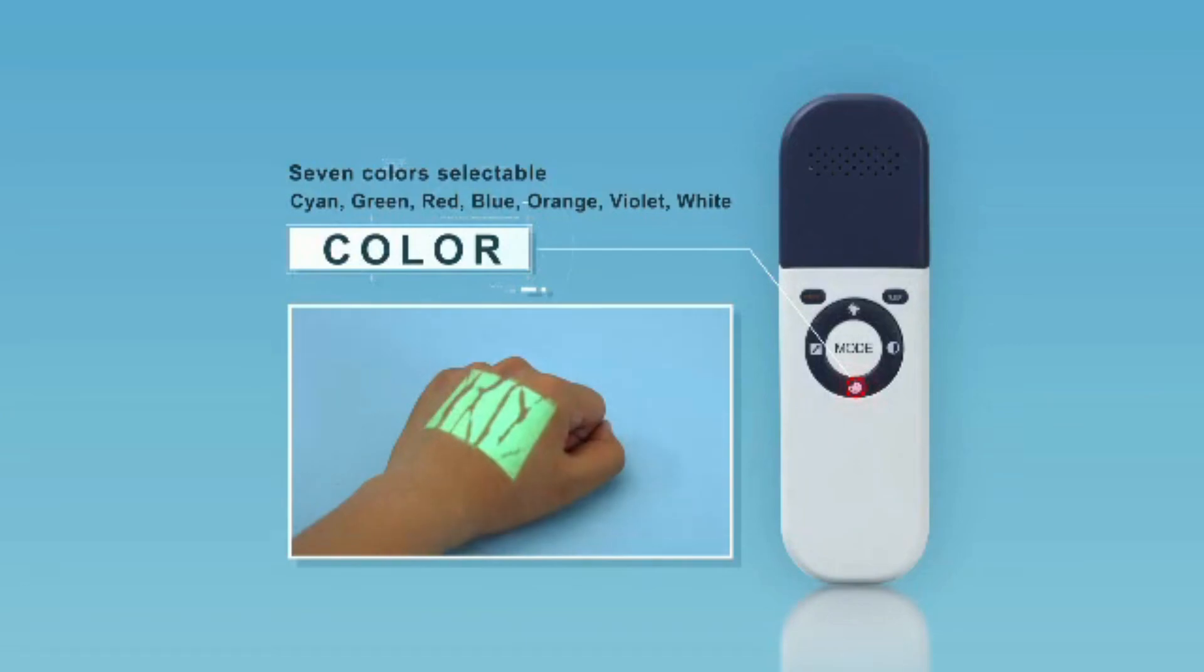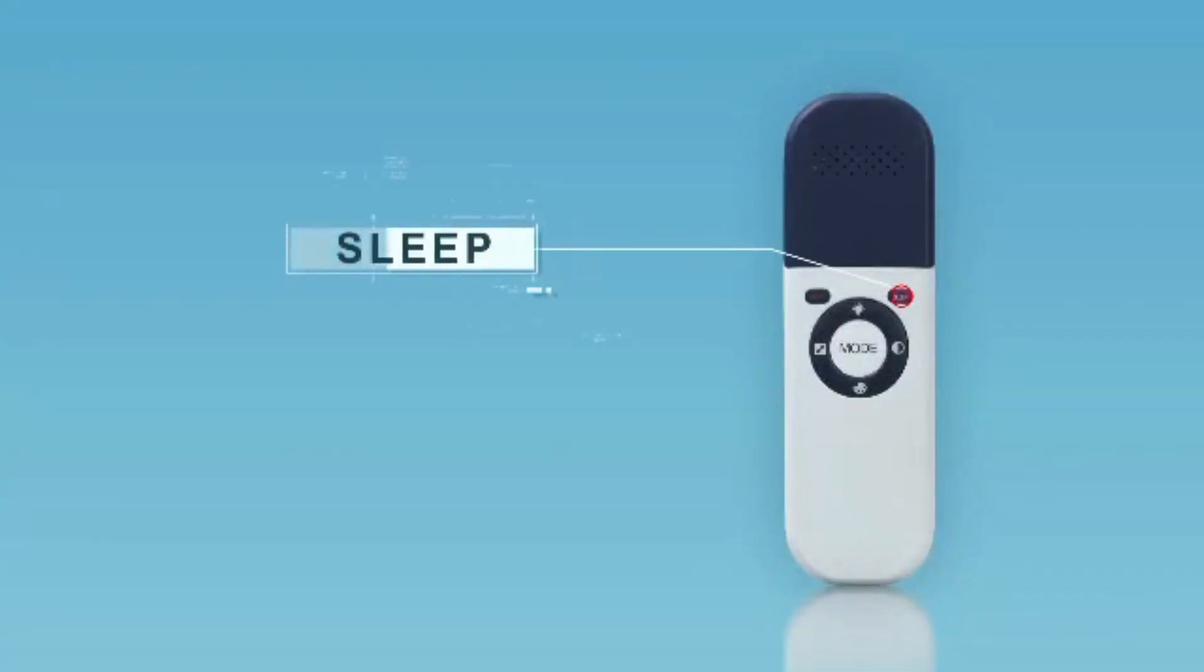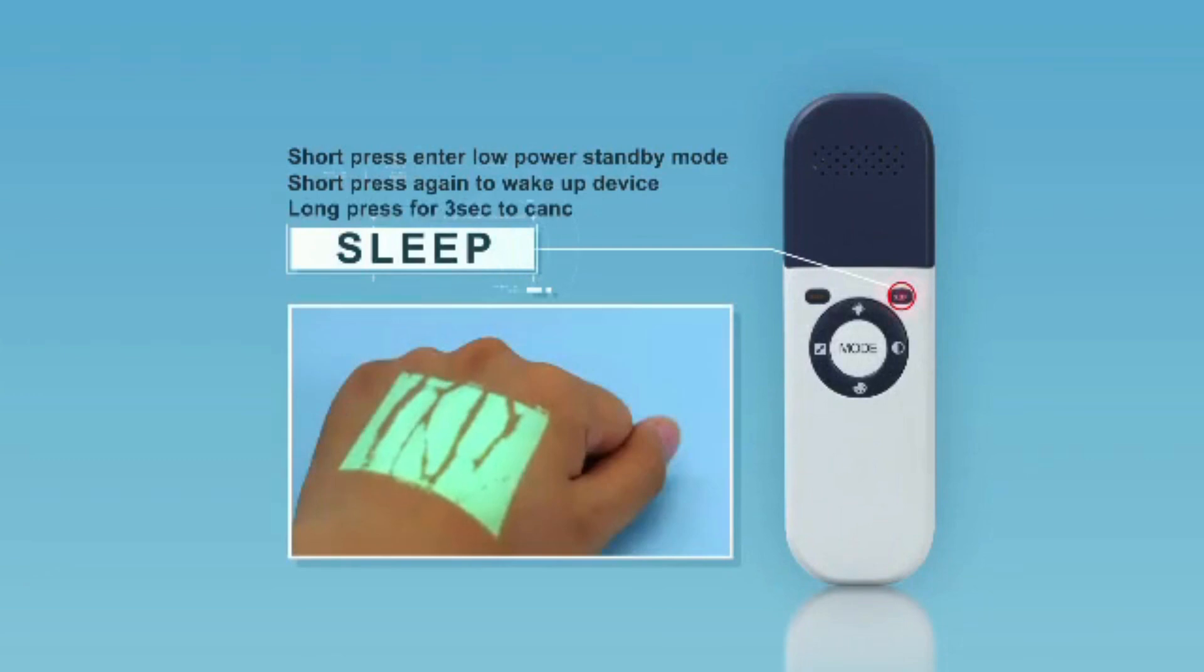Short press sleep button to enter low power standby mode. Short press again to wake up the device. The default setting is for the device to enter standby mode automatically if no operation for 10 minutes. Long press sleep button for 3 seconds to cancel timer function, which is shown by the timer character in top left of projected image disappearing.